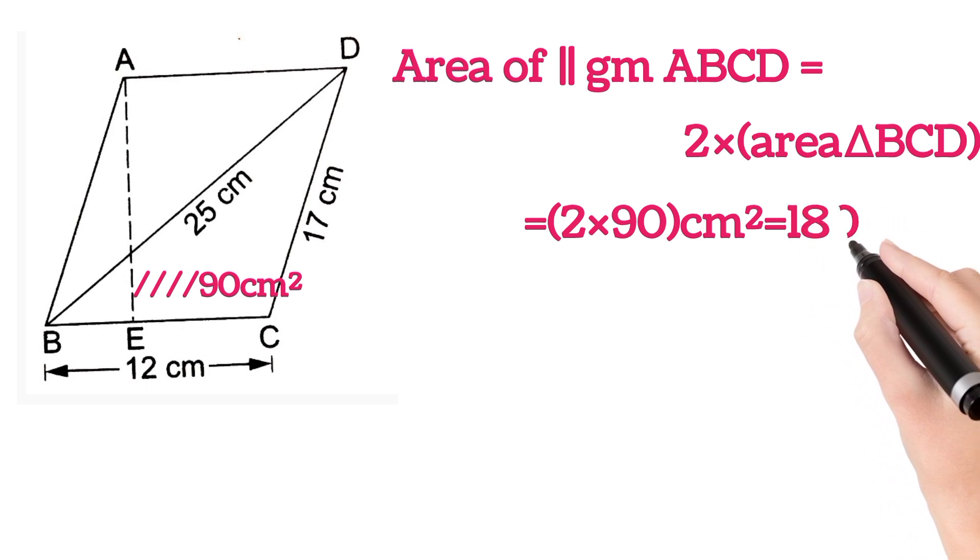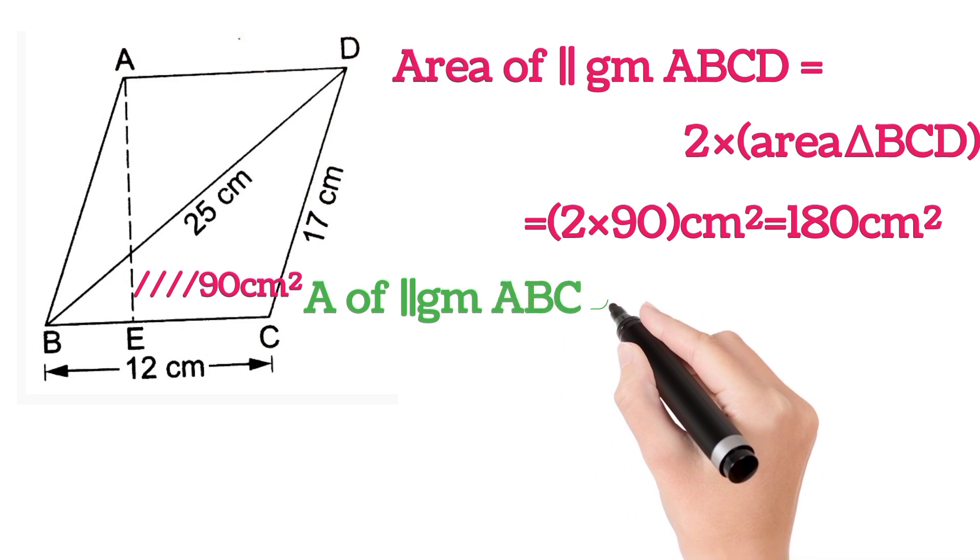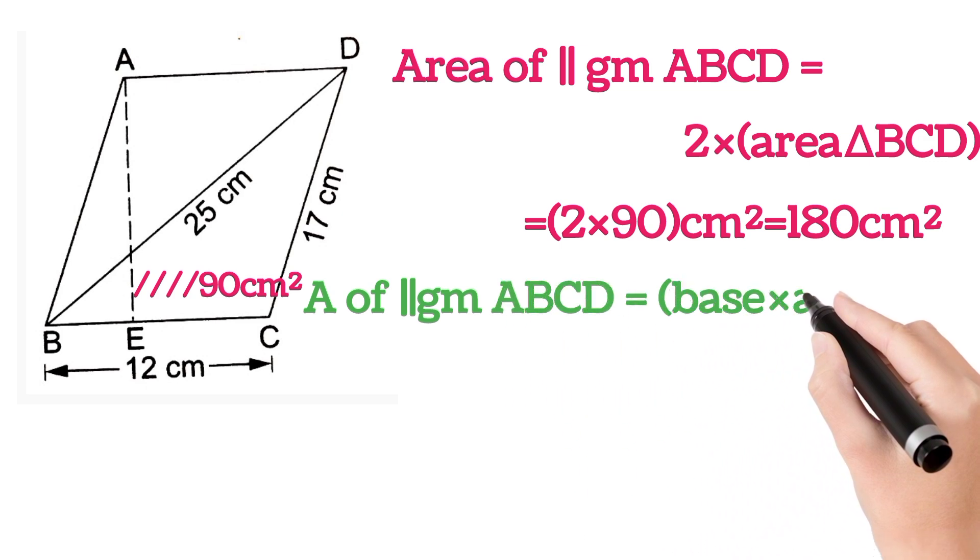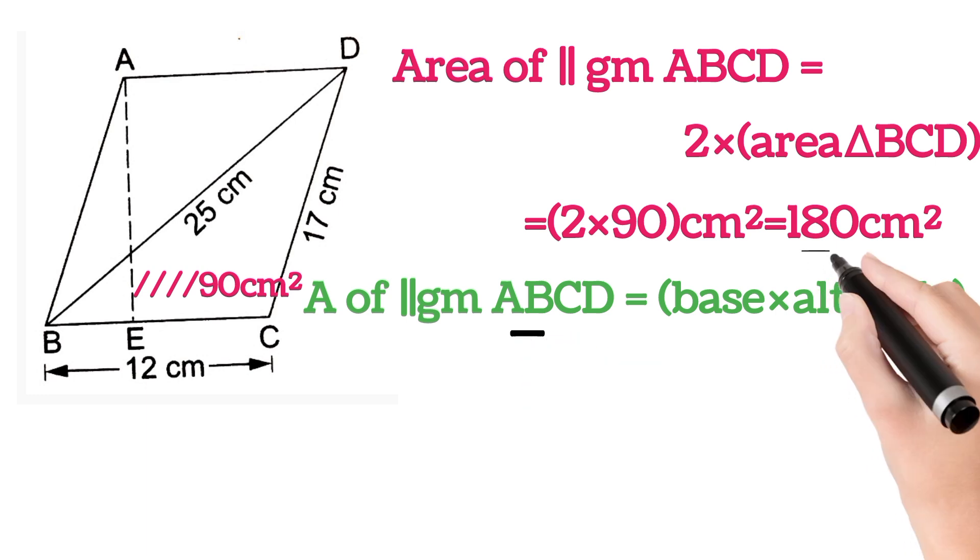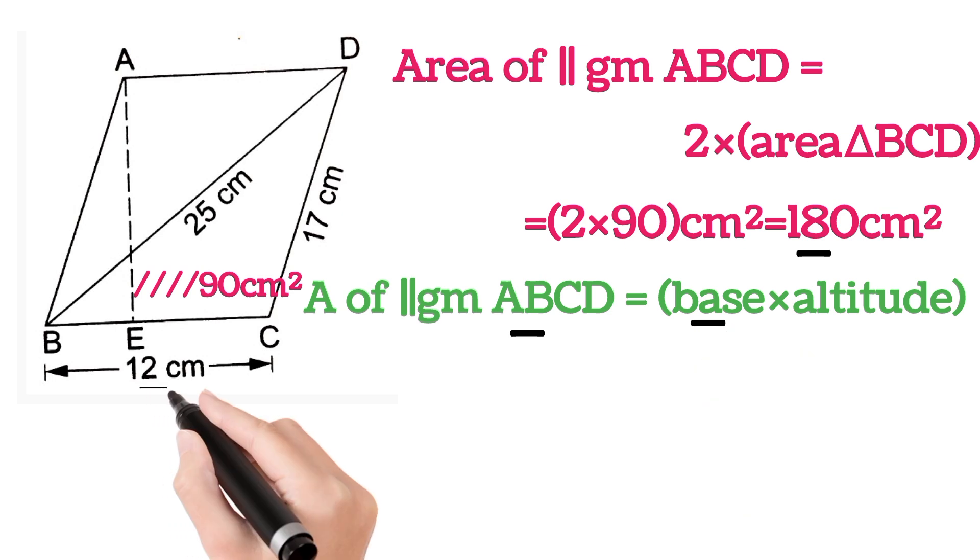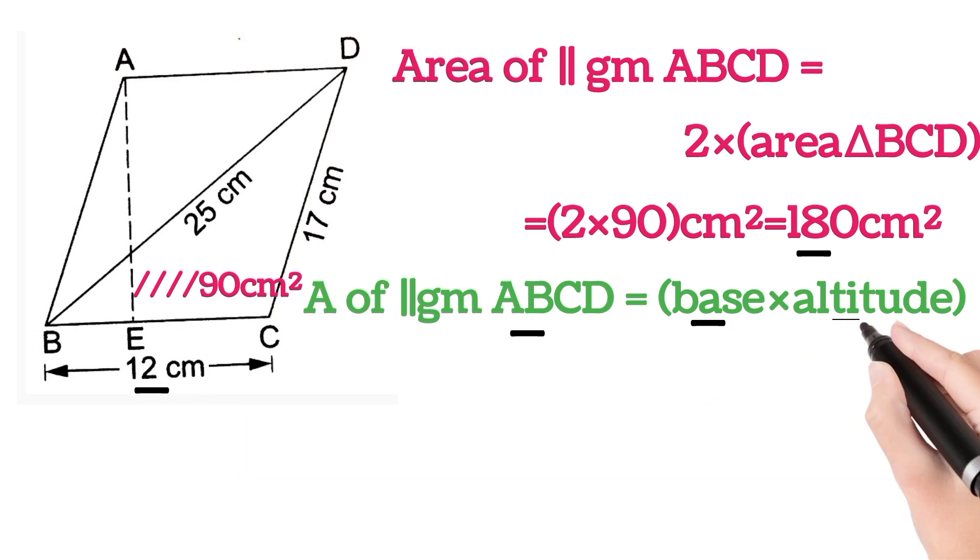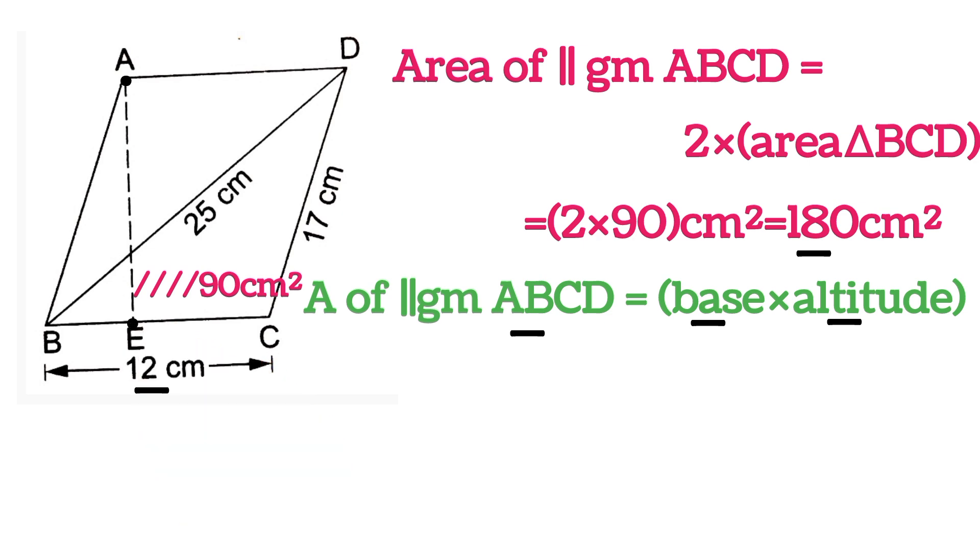Now area of parallelogram we know is 180 centimeters squared, and base is 12 centimeters, and we have to find out the value of altitude AE. So on substituting the value again, we will get 180...